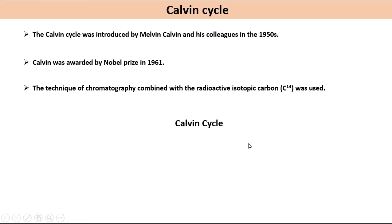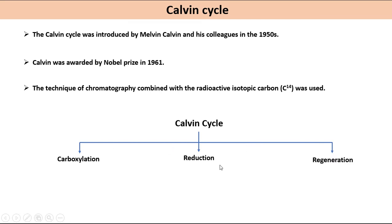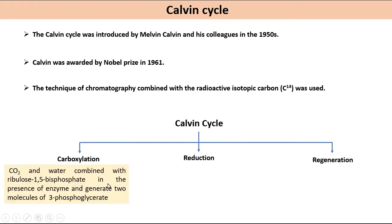The three stages are carboxylation, reduction, and regeneration. In carboxylation, CO2 and water combine with ribulose-1,5-bisphosphate in the presence of RuBisCO enzyme and generate two molecules of 3-phosphoglycerate.